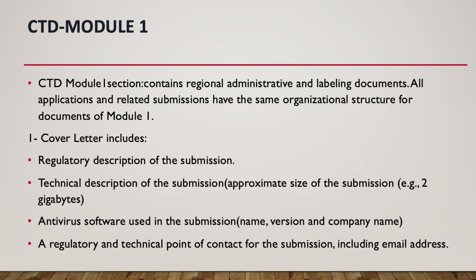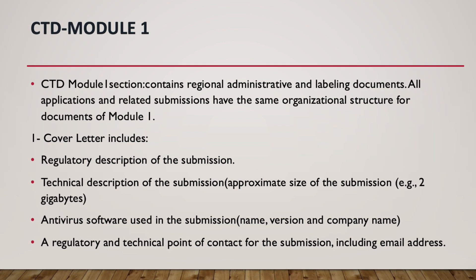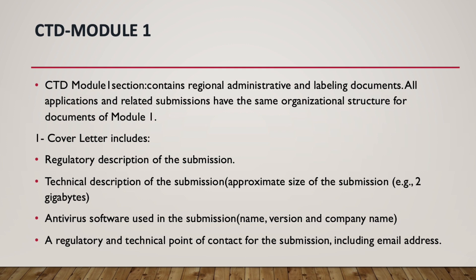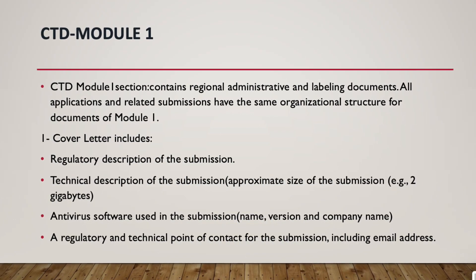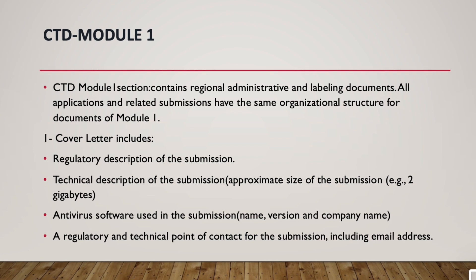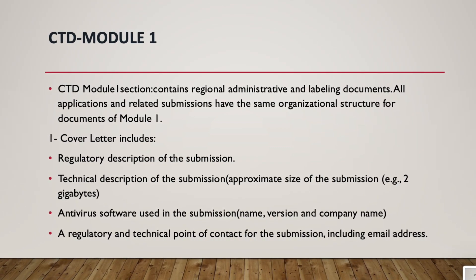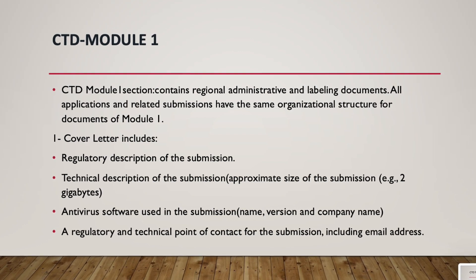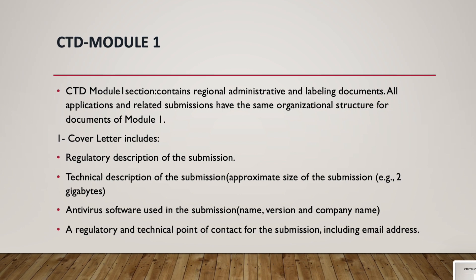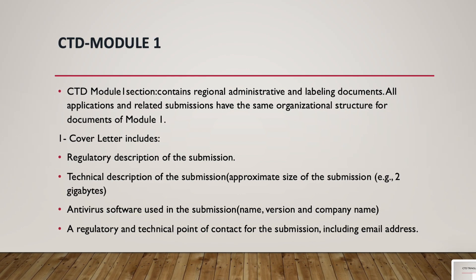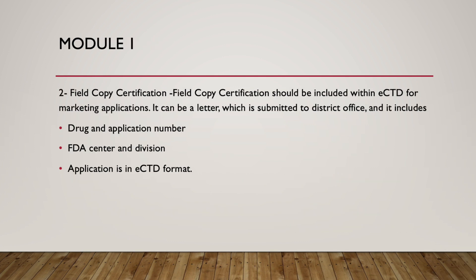CTD Module 1 contains regional administrative and labeling documents. All applications and related submissions have the same organizational structure for Module 1 documents. The cover letter includes a regulatory and technical description of the submission, approximate size of the submission (for example, 2 gigabytes), antivirus software used including name, version, and company name, and a regulatory and technical point of contact including email address.